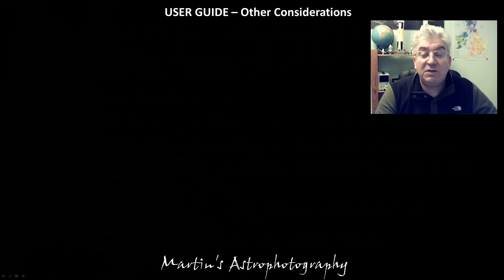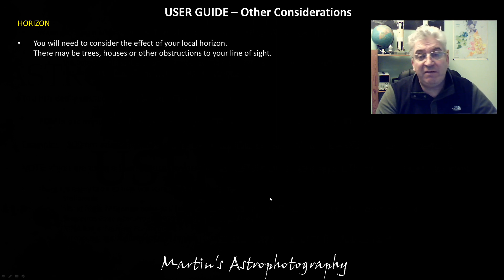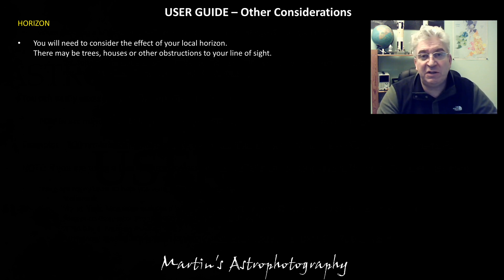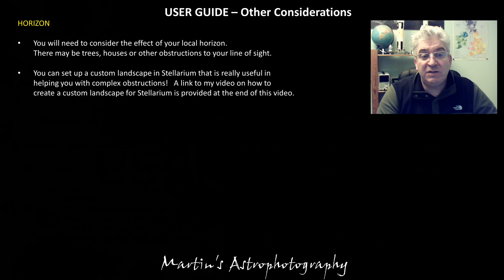Now aside from framing, there are some other things that we need to consider, and that begins with your horizon. Depending on where you're imaging from there'll be various obstructions in your way — you won't have a zero horizon in all directions. There may be trees, houses, or other obstructions in the way, so it's important to understand how this affects your opportunity to image a target.